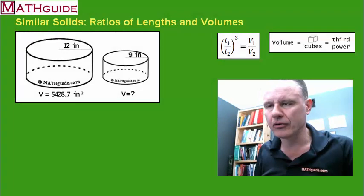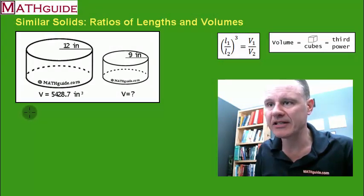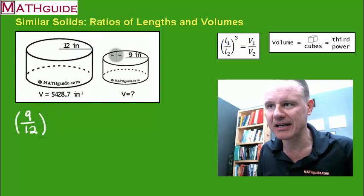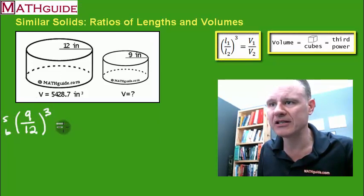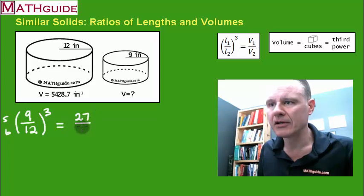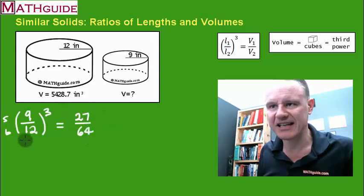For this second problem, we're dealing with cylinders, but the math works the same way. I'm going to take the ratio of their lengths — 9 to 12. These are radii, and I'm taking small to big and cubing, because it's volume. Reducing the fraction gives three fourths. Cubing three fourths gives 27 over 64. That's the ratio of their volumes, which is not the same as the ratio of their lengths.